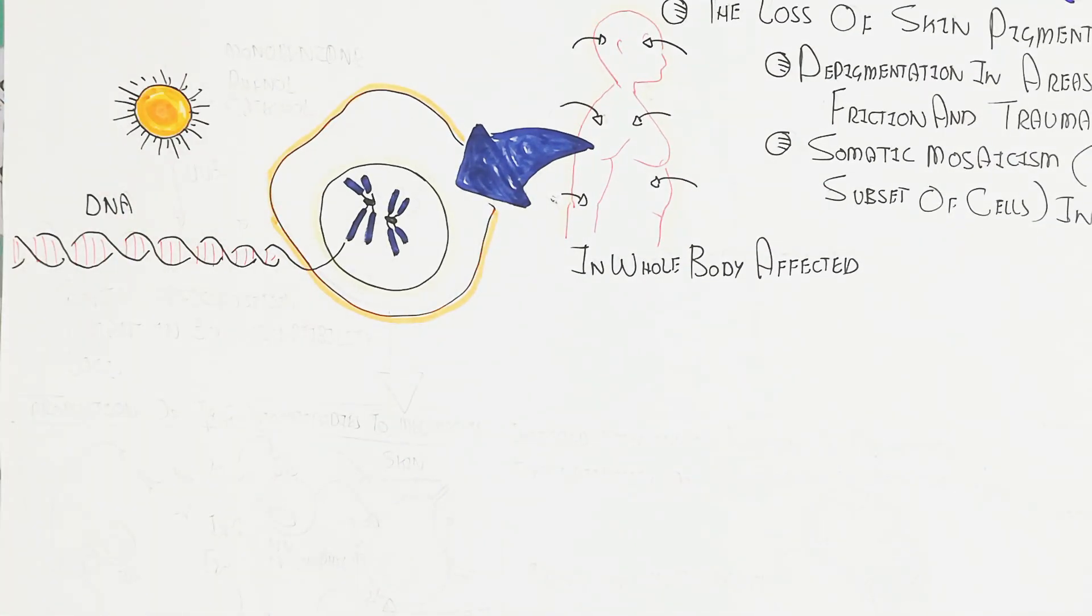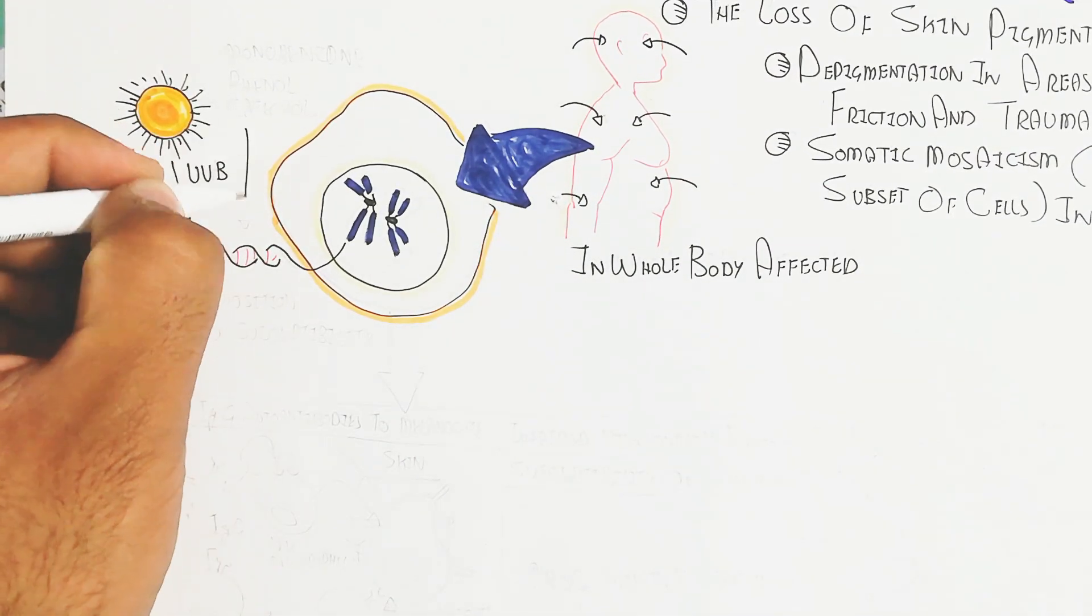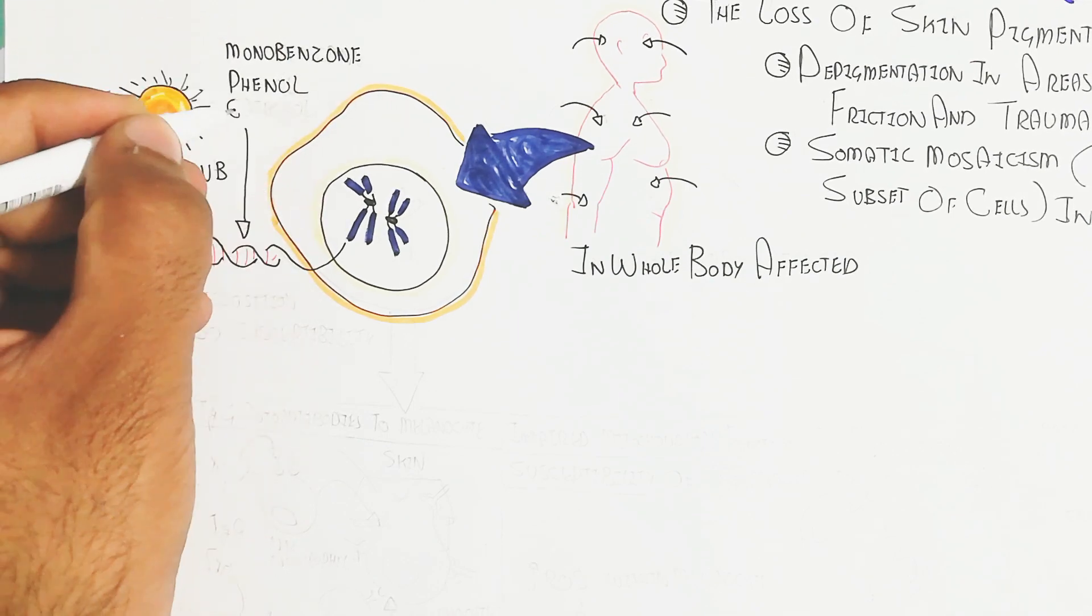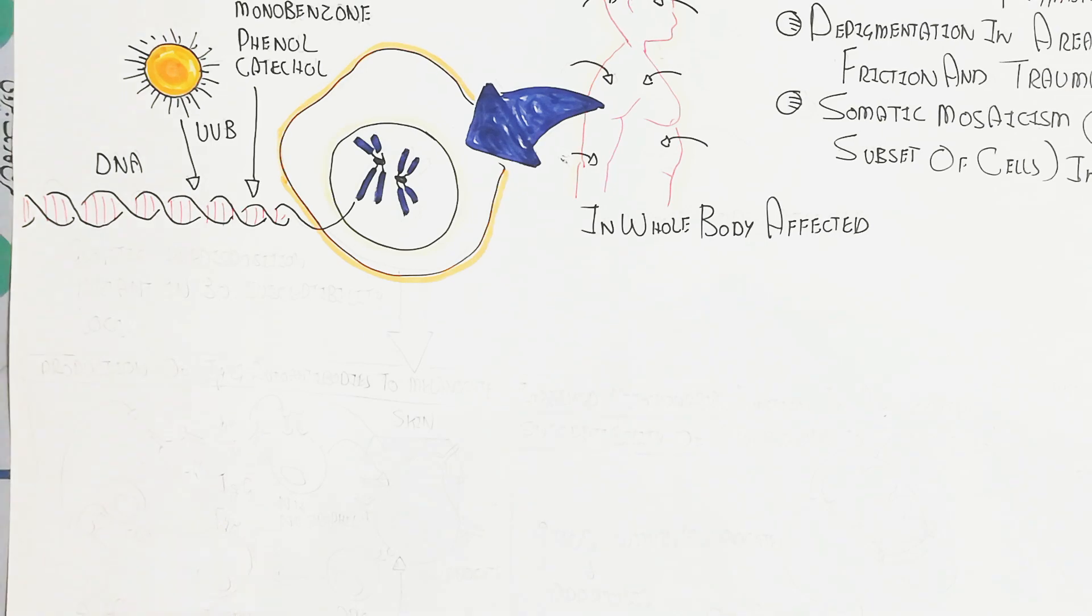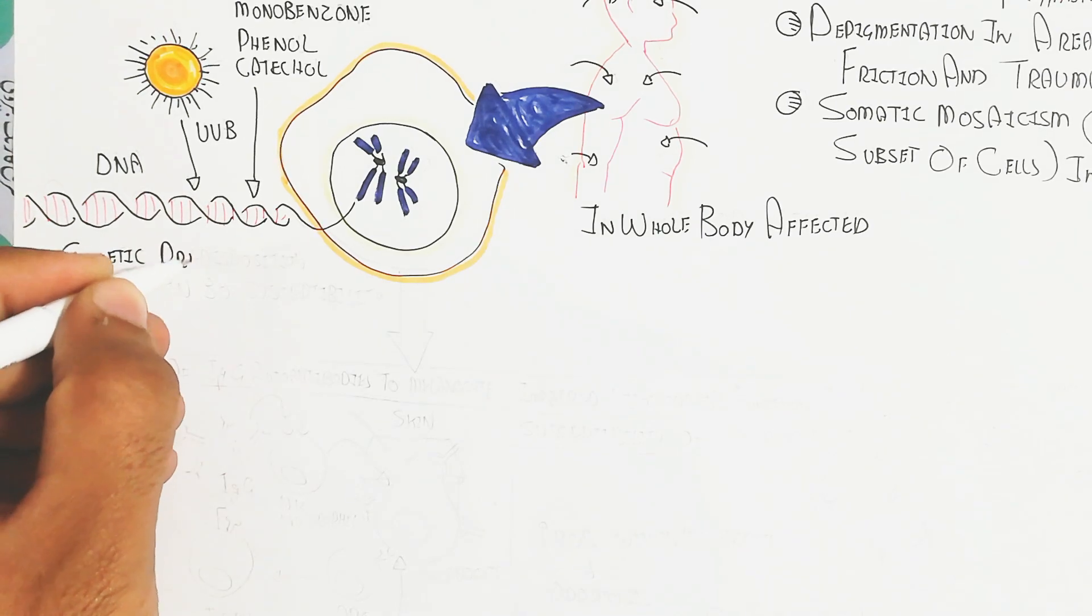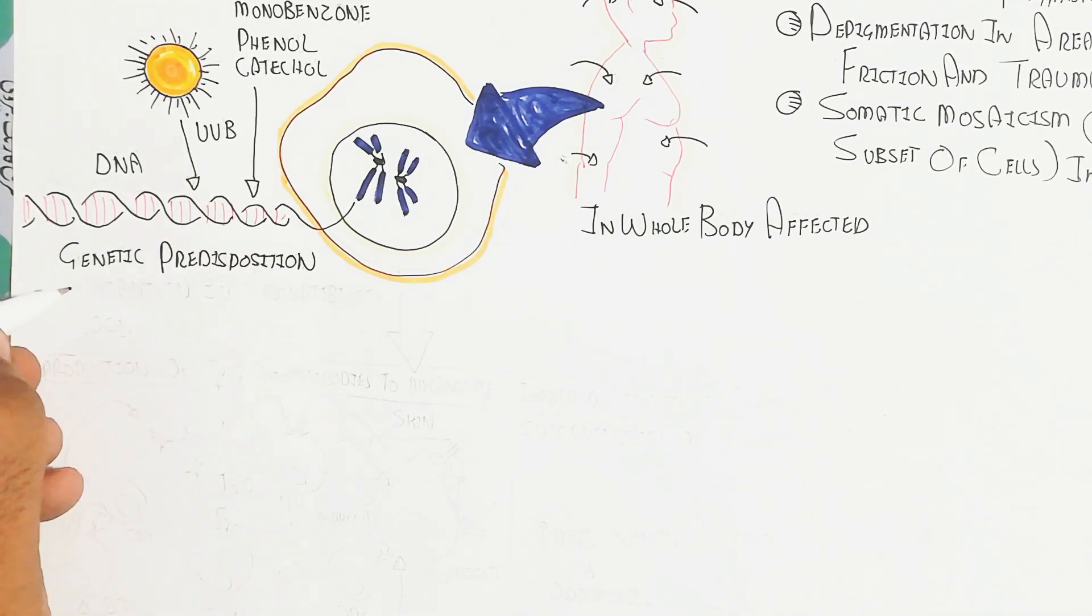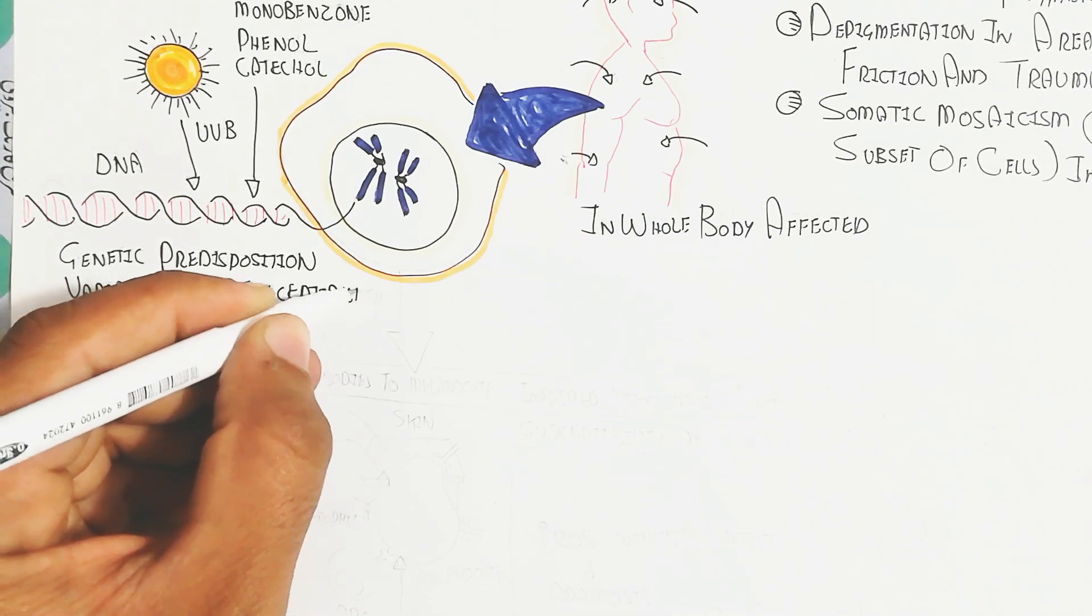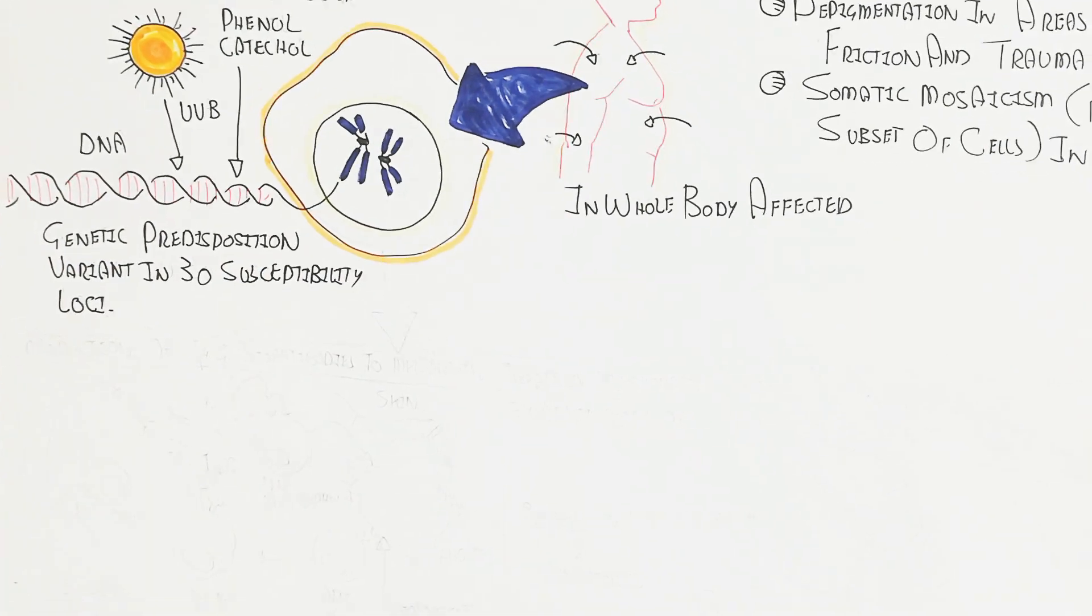The melanocyte contains DNA as genetic material. UVB, monobenzone, phenol, catechol, and sunlight lead to genetic predisposition with variants in 30 susceptibility loci.